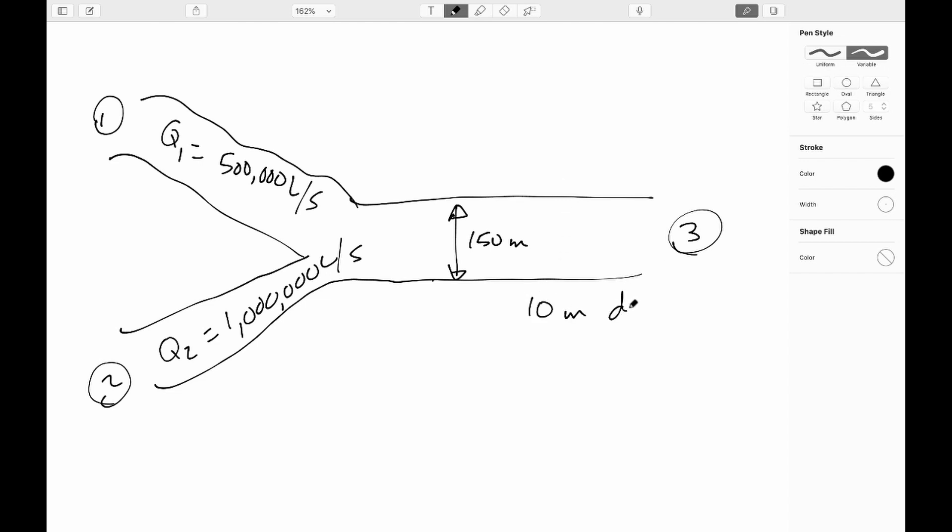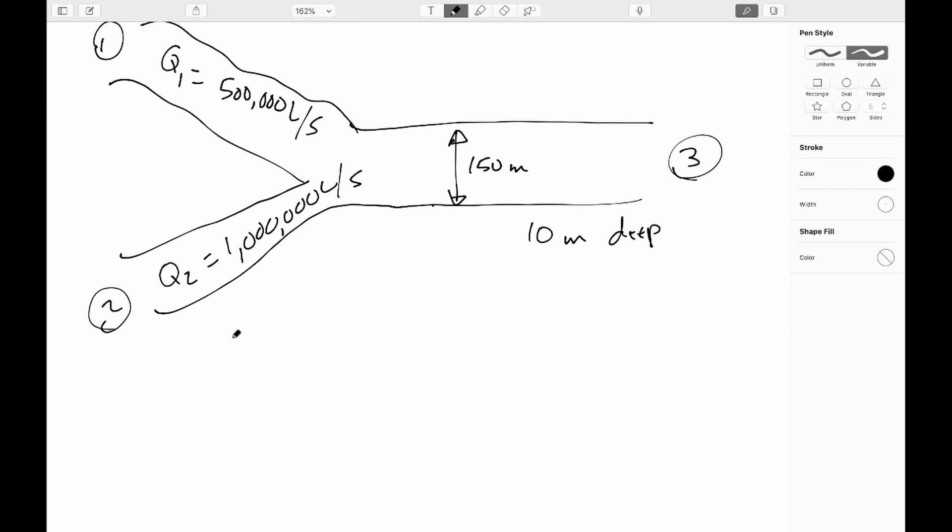So continuity is going to require that Q3 equal Q1 plus Q2, and we know that Q3 would be equal to A3 V3. So V3, which is what we want to know, would be equal to Q1 plus Q2 over A3, which would be Q1 plus Q2 over L times W.